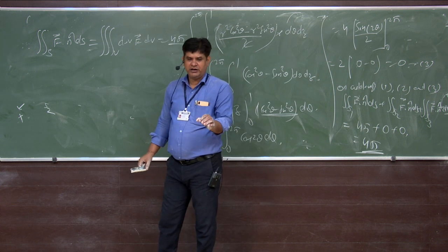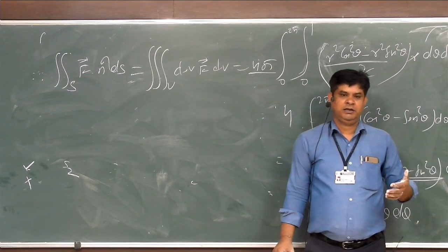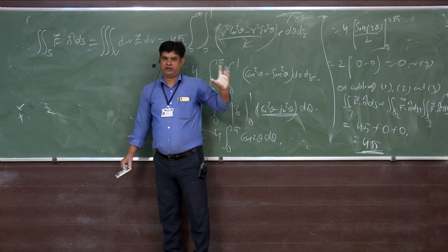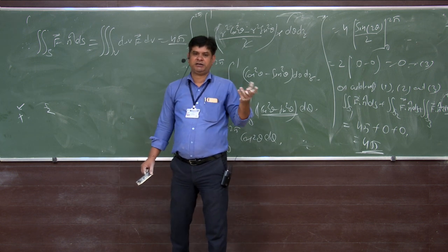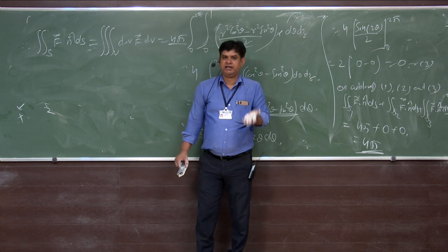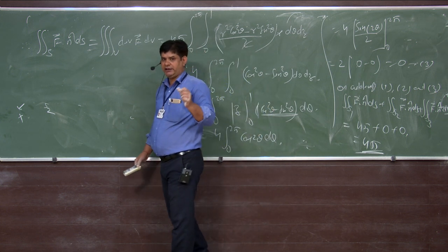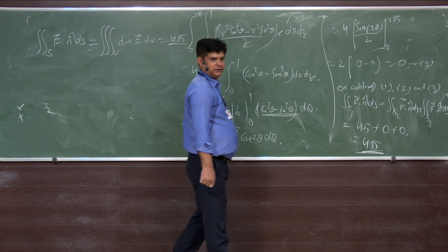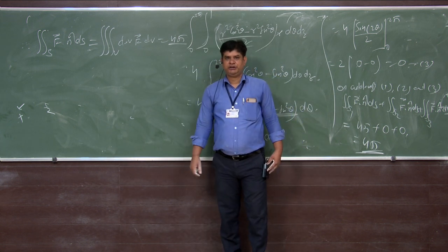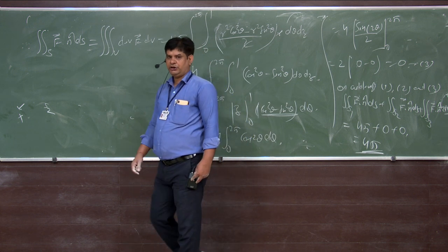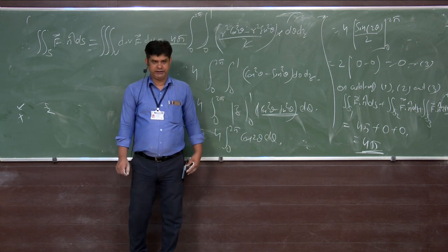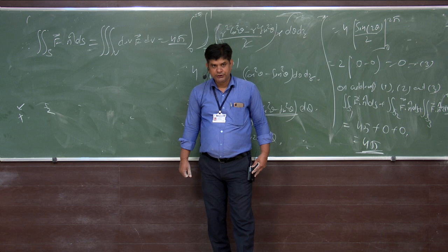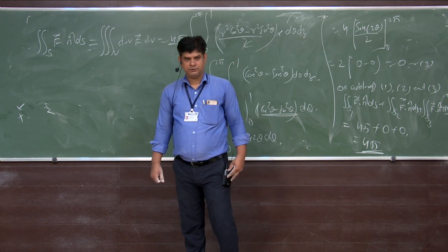Gauss Divergence Theorem is verified here. We used cylindrical coordinates for the conversion — from Cartesian to cylindrical — using the Jacobian method. Thank you so much. In the next lecture, I will talk about Stokes' Theorem, which relates the line integral and surface integral. I will do one or two examples of that as well.